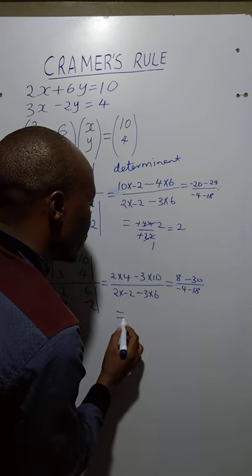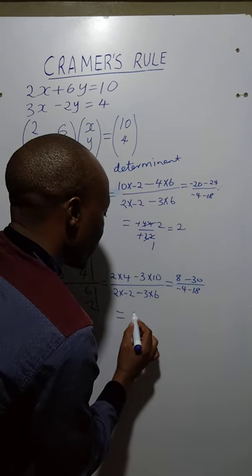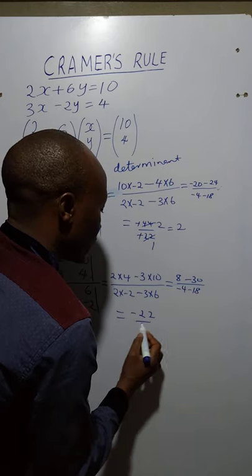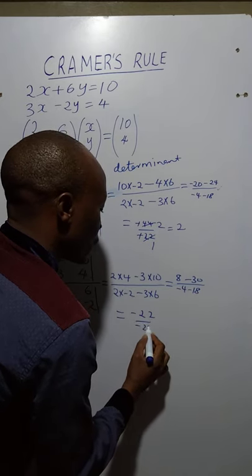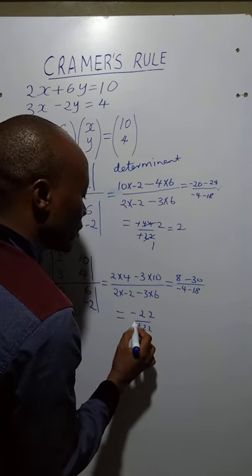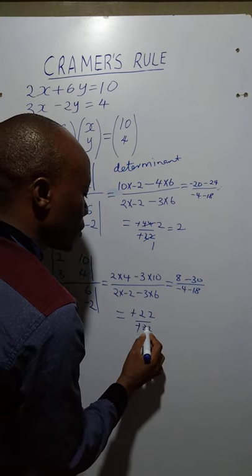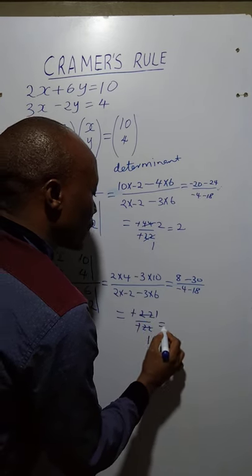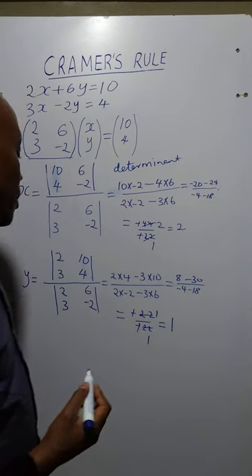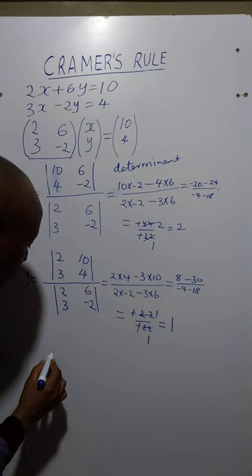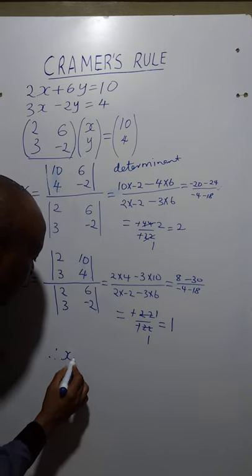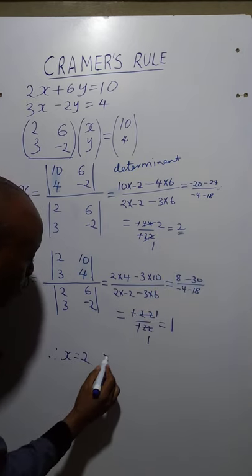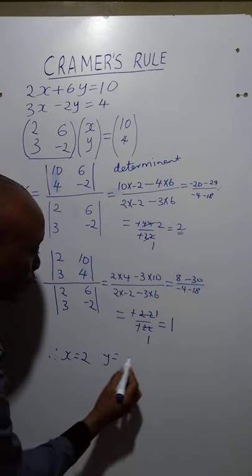That simply means: 8 minus 30 is negative 22, over negative 4 minus 18 is also negative 22. The negatives cancel and 22 cancels with 22, so the answer is 1. Therefore, x is equal to 2 and y is equal to 1.